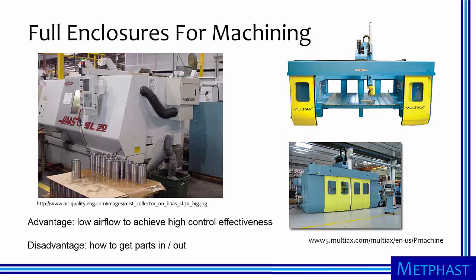Here we show full enclosures for machining of metal parts. The doors of the enclosure open, parts are manually or automatically inserted, the doors close and machining is performed by computer control. The doors then open, the part is exchanged, and the next part is machined.